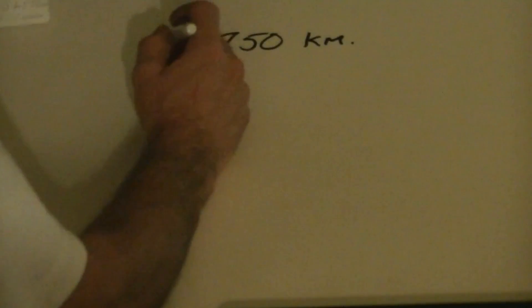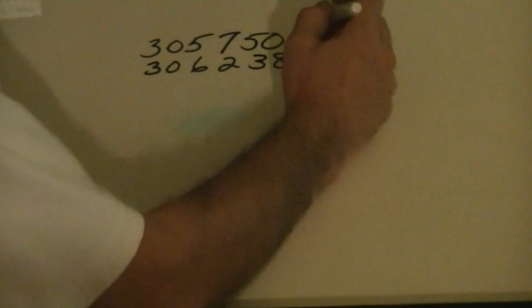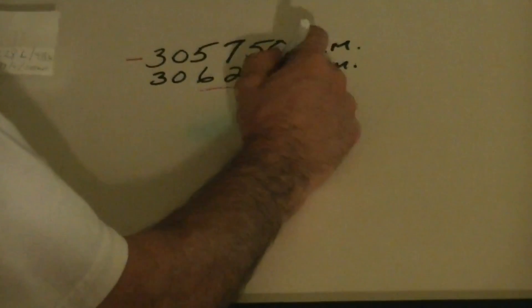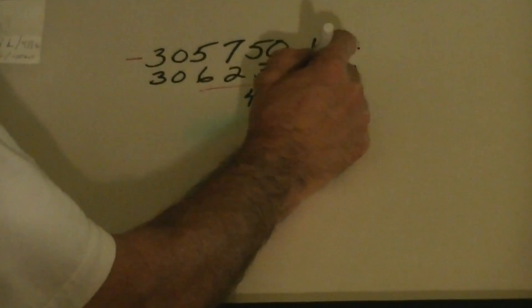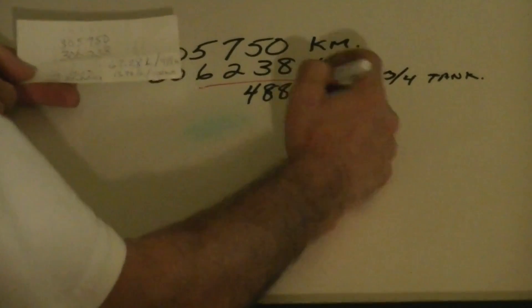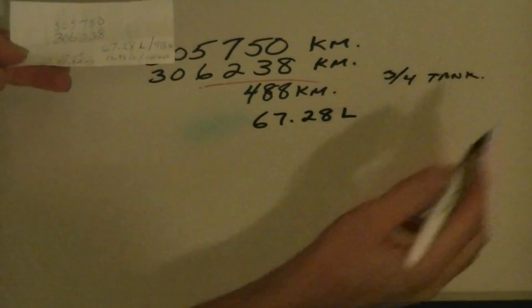This truck's been around a few times. At the first time I checked it, it had 305,750 kilometers on it, and I wrote that number down. Then I fueled up at 306,238 kilometers, which gave me a total of 488 kilometers driven. At that fill-up, I put in 67.28 liters of diesel.